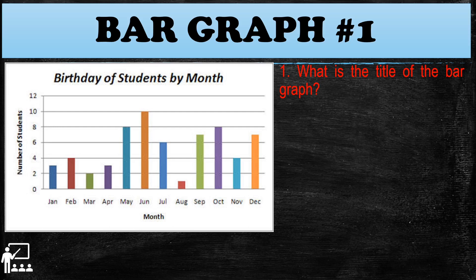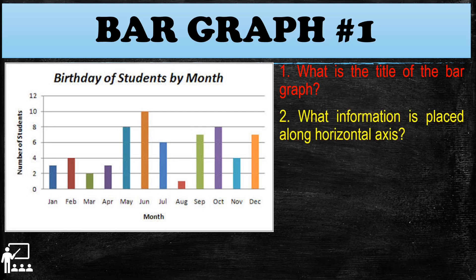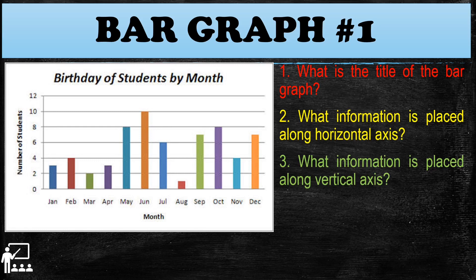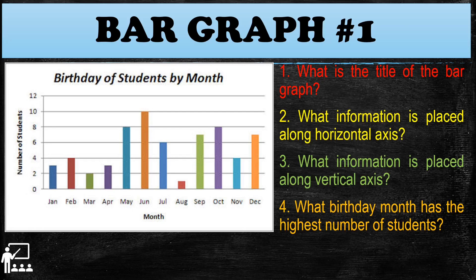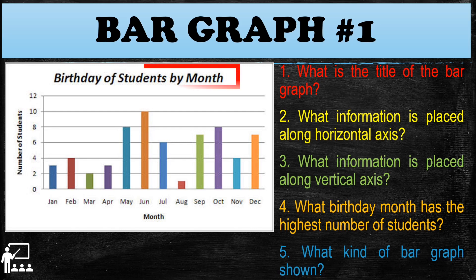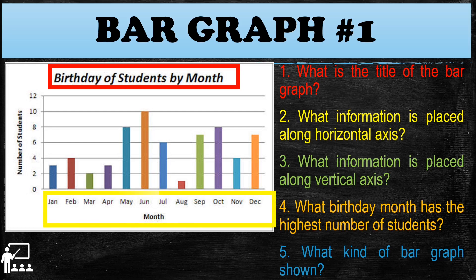Let's try to answer the guided questions. First: What is the title of the bar graph? What information is placed along the horizontal axis? What information is placed along the vertical axis? What month has the highest number of students? And what kind of bar graph is shown? For question one, the title of the bar graph is 'Birthday of Students by Month.'